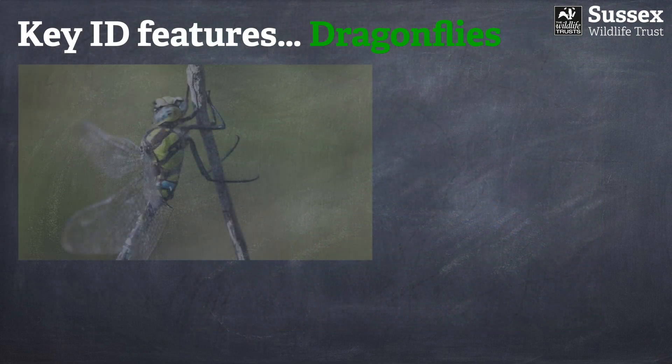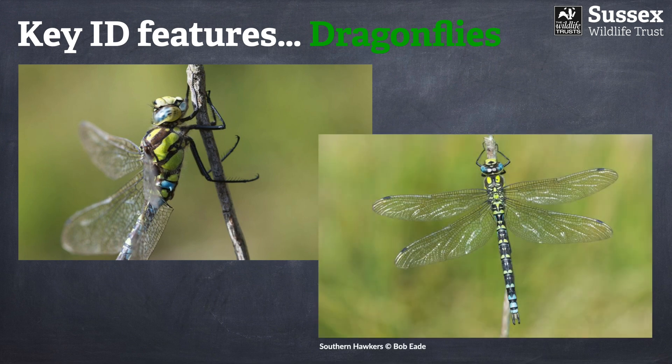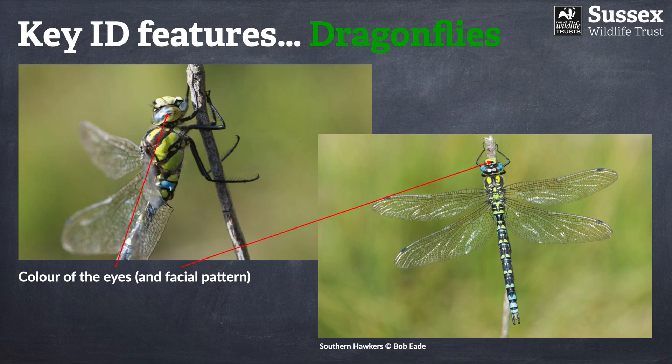Now that we've looked at the groups of dragonflies and damselflies, we're going to move on to some key identification features to help you understand what you're looking at. Perhaps one of the first things to keep an eye out for is the colour of the eyes, or maybe even the colour and patterning on the front of the face. I would say this isn't necessarily an imperative feature, but it may assist you in some cases.